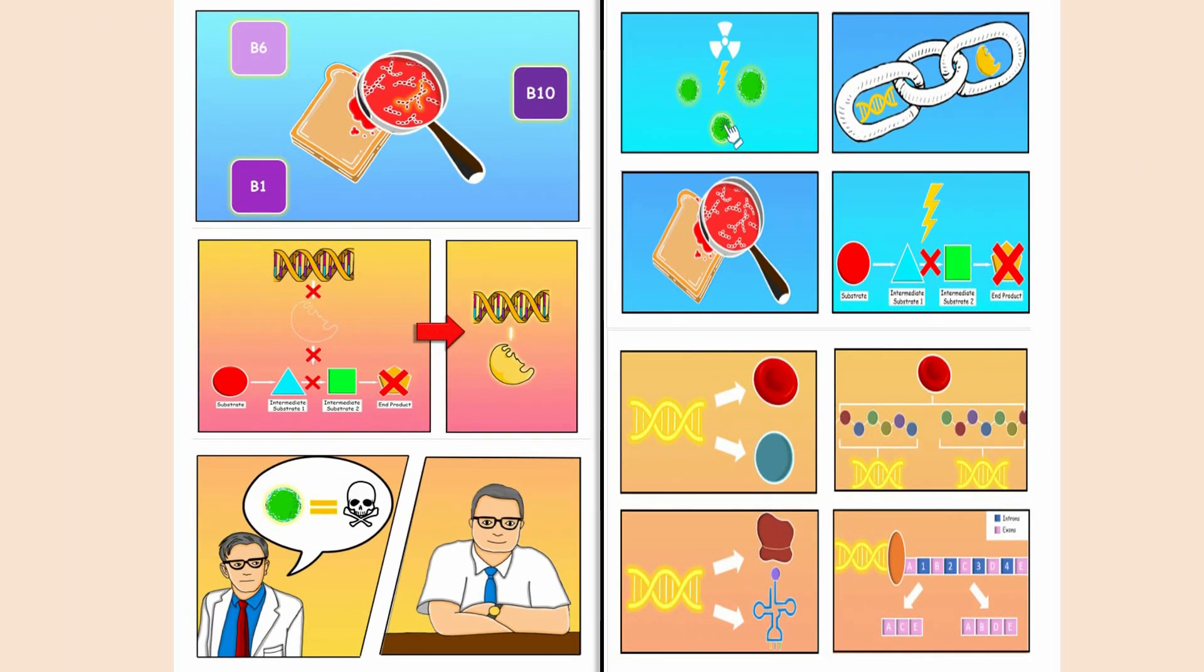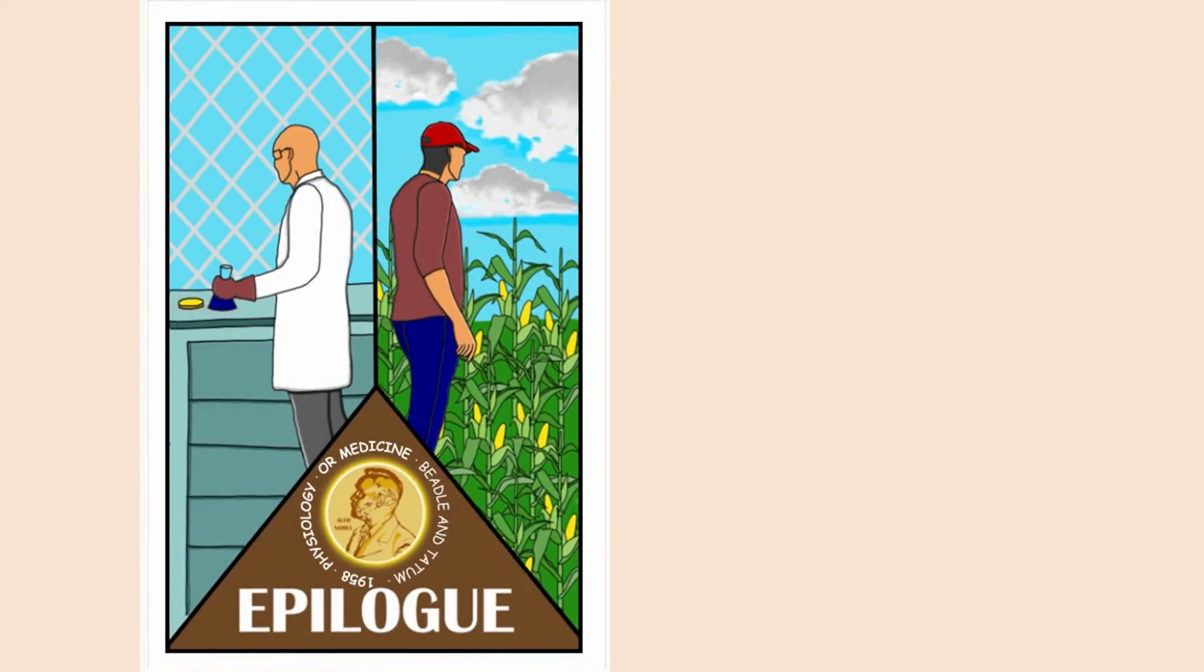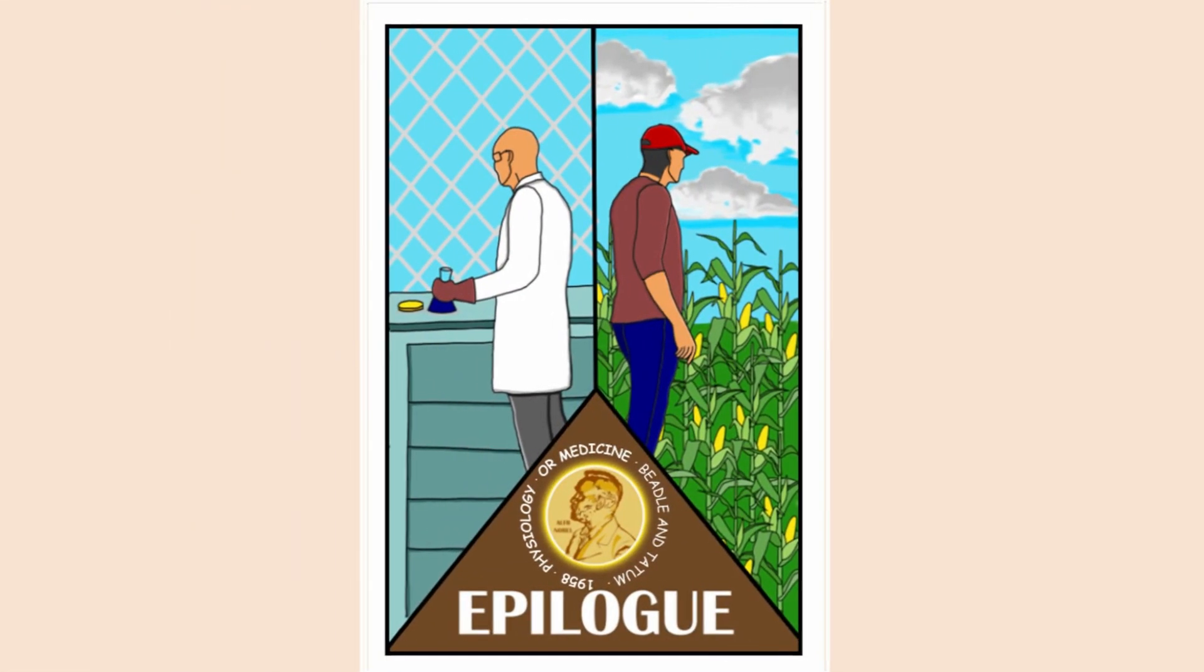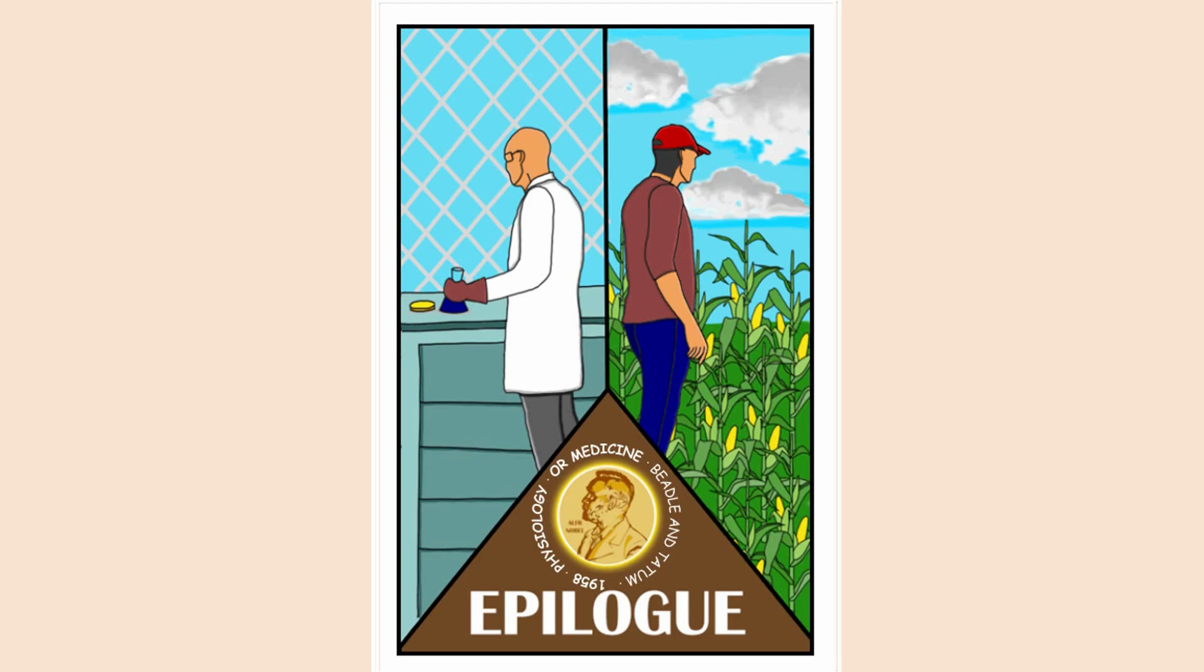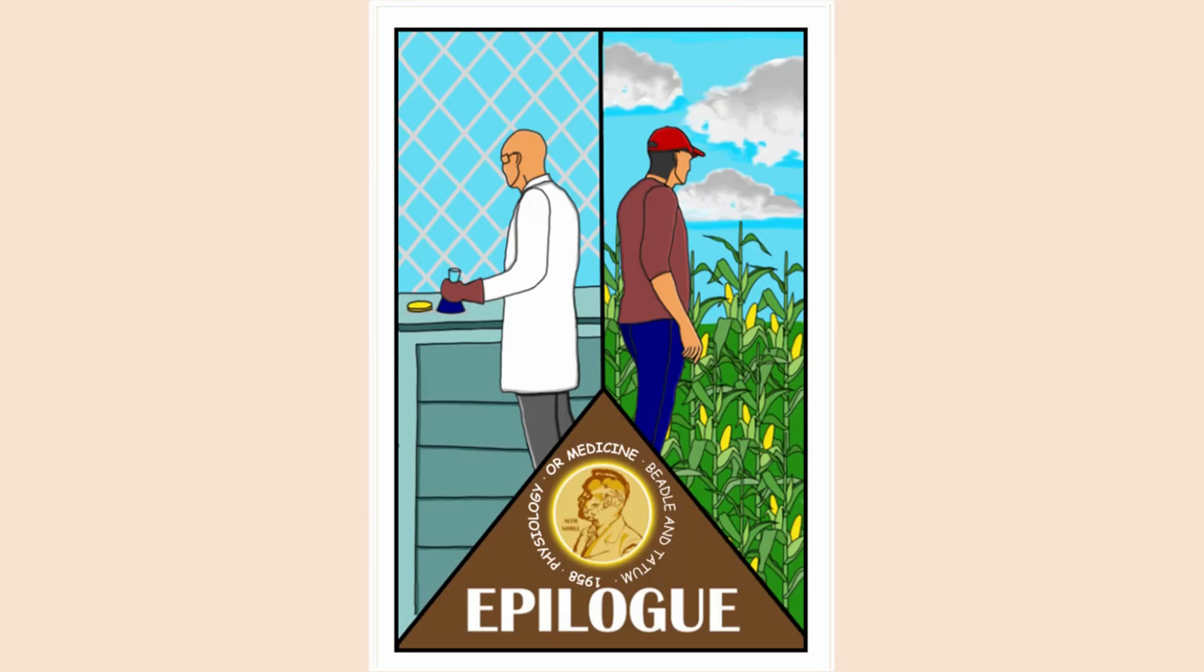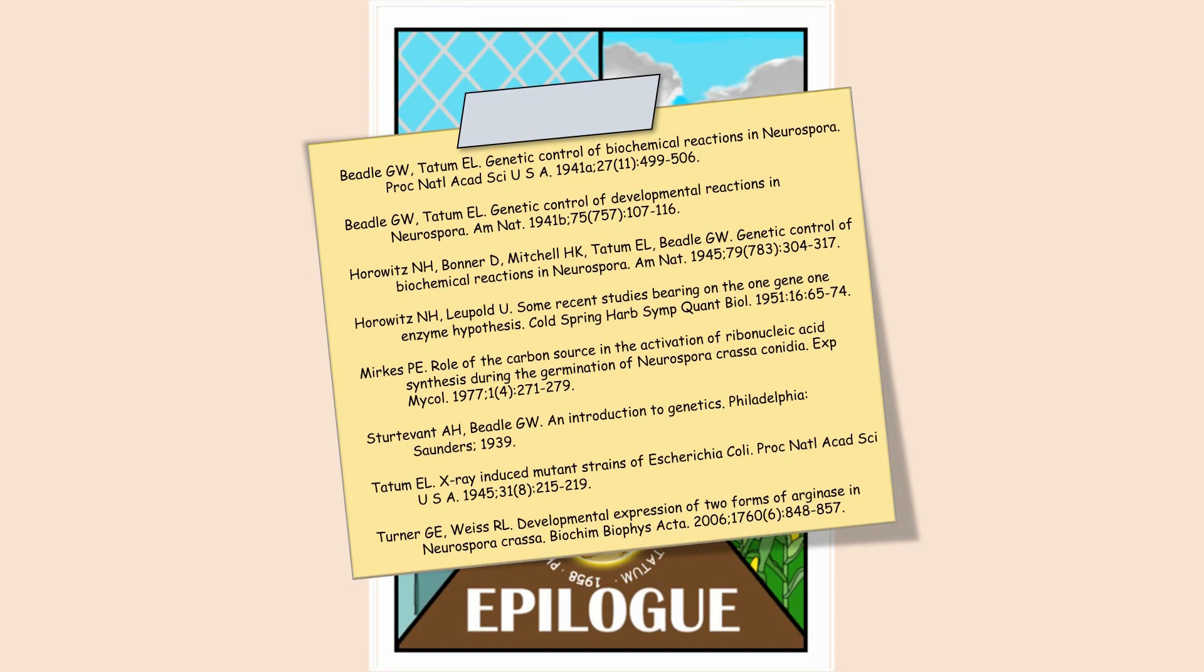However, none of this would have been possible if not for Beadle and Tatum's revolutionary experiment. Following their Nobel Prize-winning finding, Beadle retired from experimental science, but conducted studies on corn, while Tatum expanded his study to investigate sexuality in Escherichia coli. But these are stories for another day.